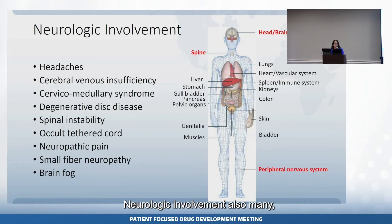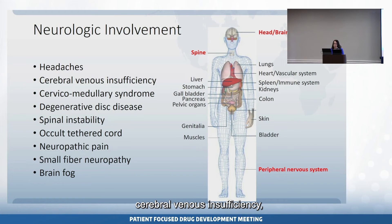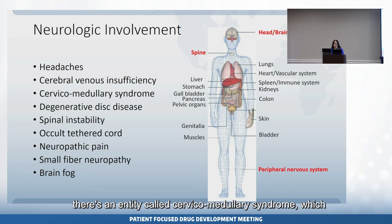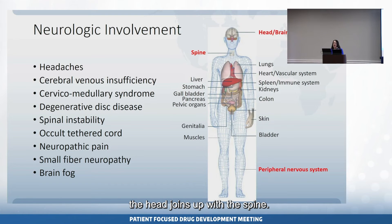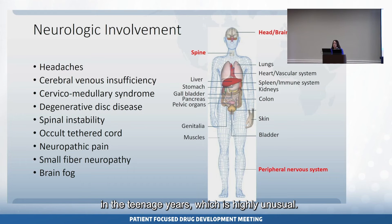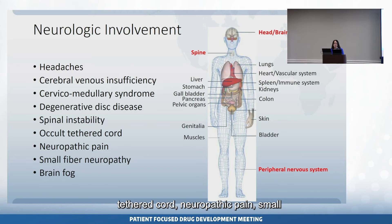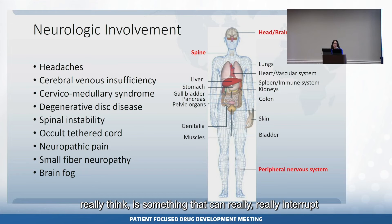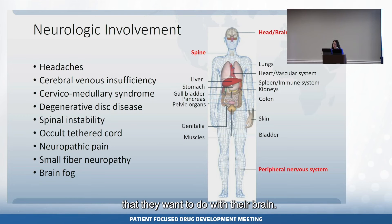Neurologic involvement also has many different manifestations: chronic headaches of many different types, cerebral venous insufficiency, and an entity called cervicomedullary syndrome related to issues at the place where the head joins the spine. Degenerative disc disease may happen very early, even in the teenage years, which is highly unusual. There is also instability in the spine causing neurologic complications, tethered cord, neuropathic pain, small fiber neuropathy, and brain fog. That brain fog — the inability to really think — is something that can really interrupt people's lives because they're unable to do the things they want to do with their brain.